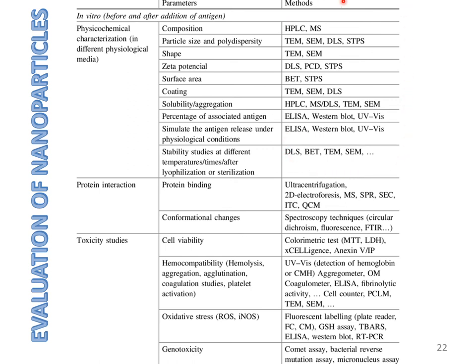The instrumentation techniques involved in physicochemical characterization are mentioned on the right-hand side — you can read more from any standard analytical textbook. For in vivo behavior, it is necessary to understand whether these nanoparticulate systems will bind to proteins circulating in blood. For this purpose, several tests are carried out: ultracentrifugation, 2D electrophoresis, MS, SPR, SEC, ITC, and QCM. Conformational changes in associated proteins also need to be assessed using spectroscopy, fluorescence, and FTIR.